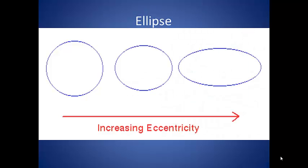As the points move further apart, the ellipse becomes flatter and increases what we call eccentricity. Now, a perfect circle has an eccentricity of zero. A straight line has an eccentricity of one.